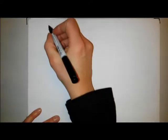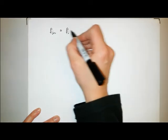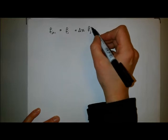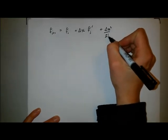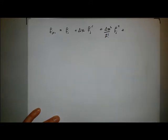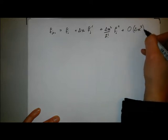I'll start with f_{j+1}. f_{j+1} = f_j + delta x f'_j + delta x squared over 2 factorial f''_j, plus this of course goes on forever, so I'm just going to say order term delta x cubed.